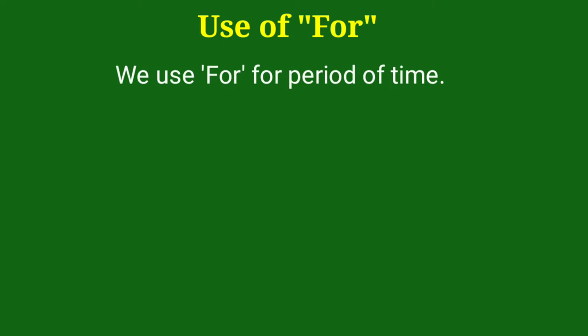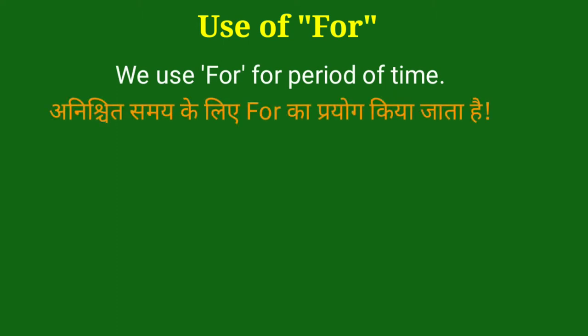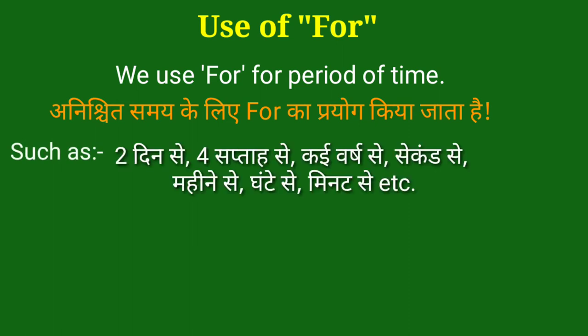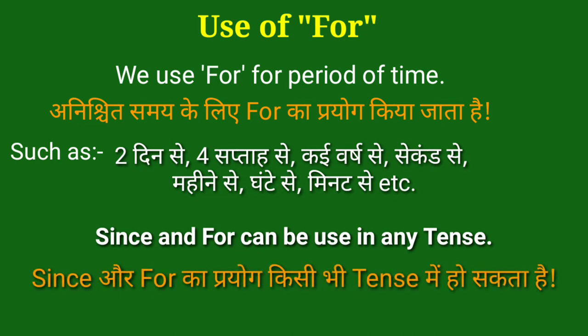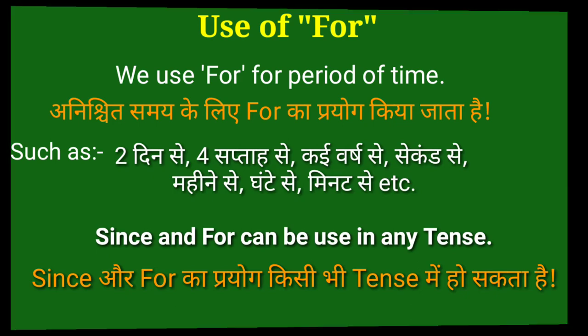Use of for — for का प्रयोग। We use 'for' for a period of time. अनिश्चित समय के लिए for का प्रयोग किया जाता है, जैसे कि दो दिन से, चार सप्ताह से, कई वर्ष से, महीने से, घंटे से, मिनट से। Since and for can be used in any tense. Since और for का प्रयोग किसी भी tense में हो सकता है।